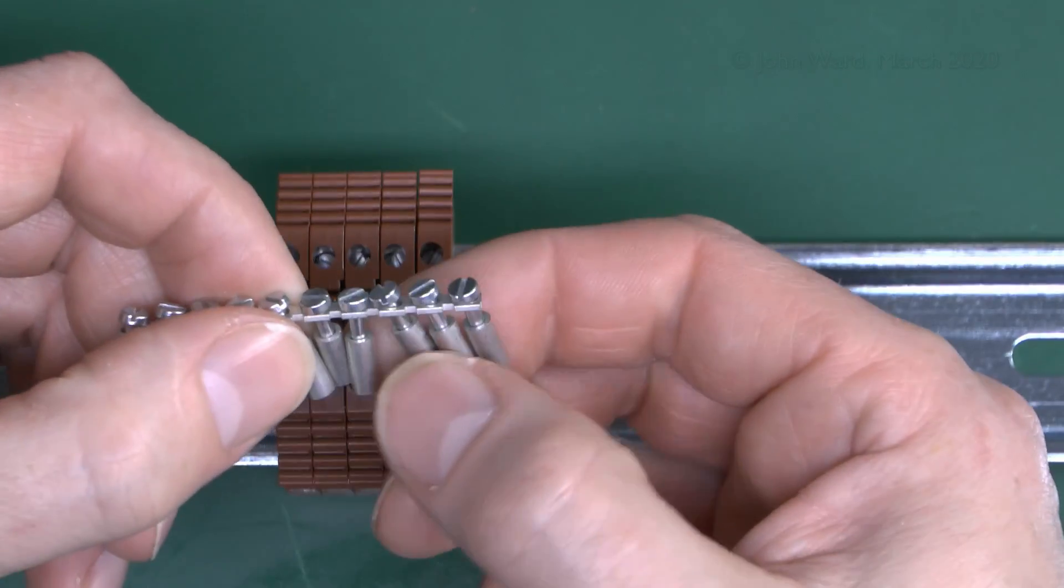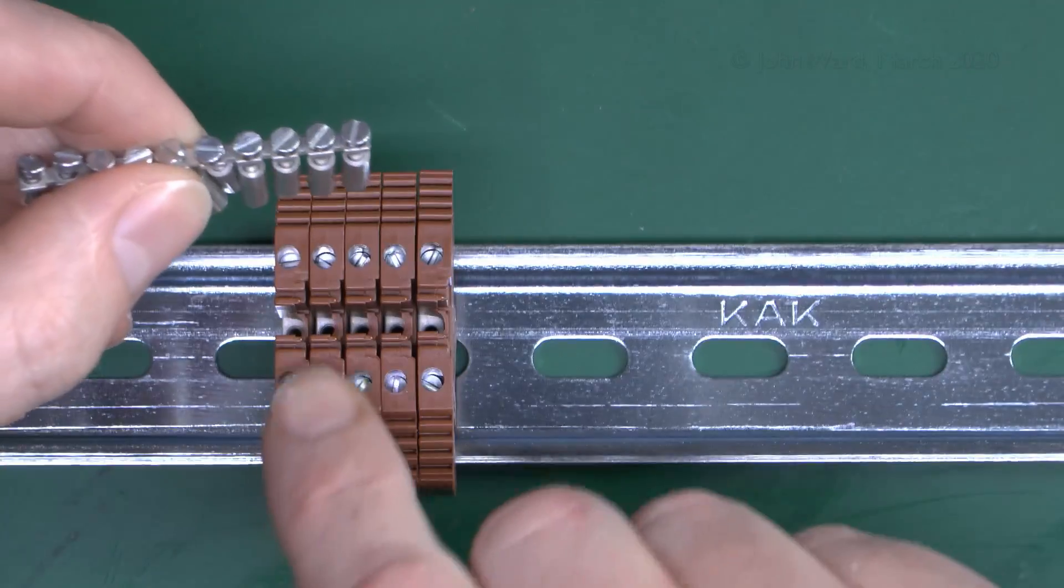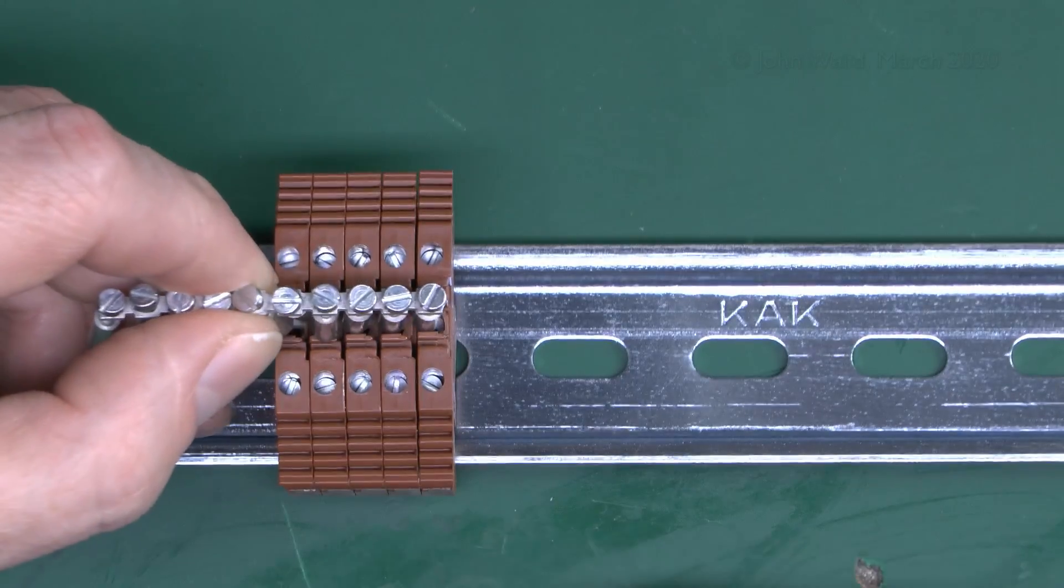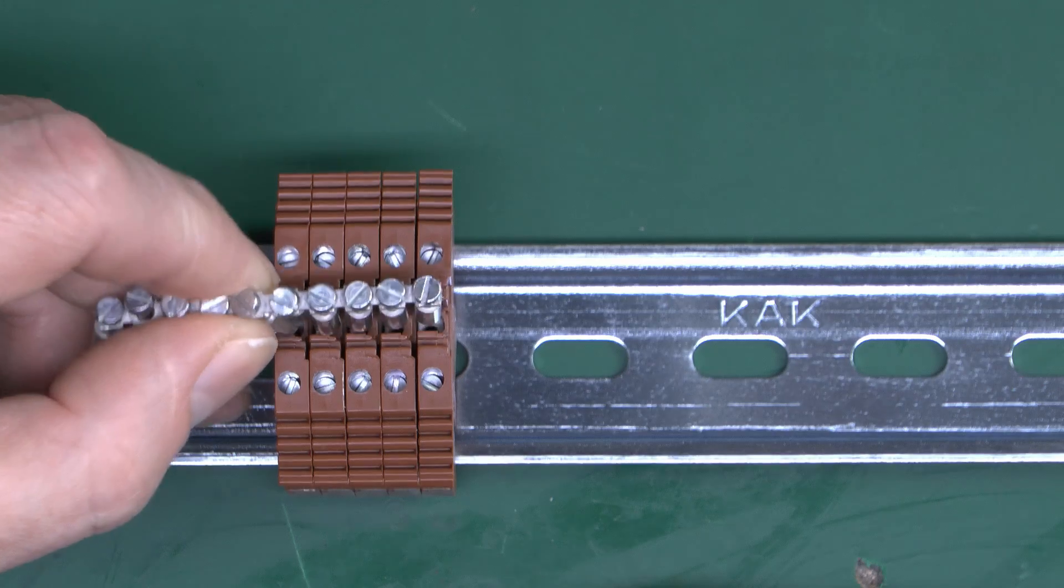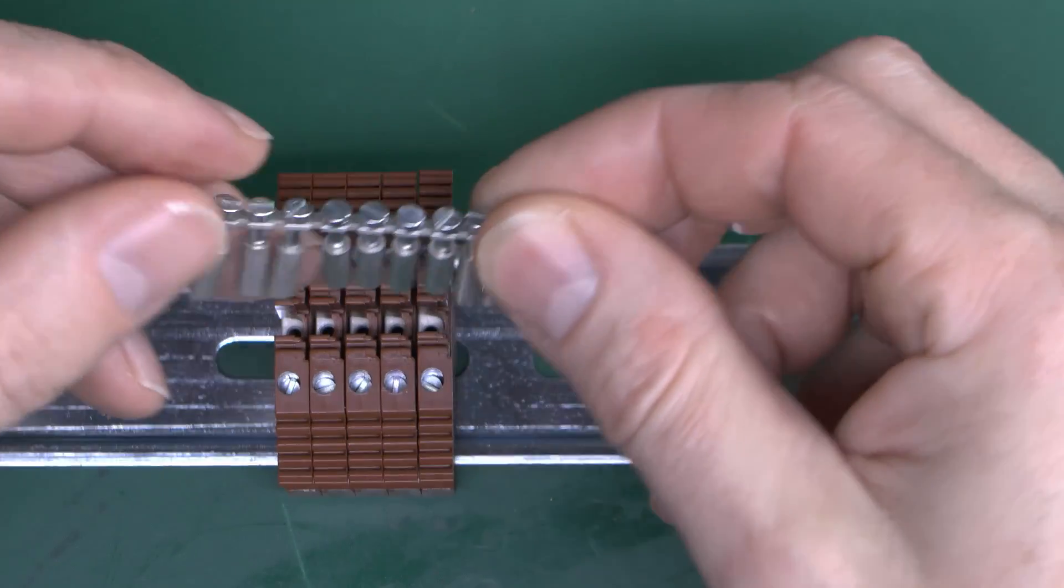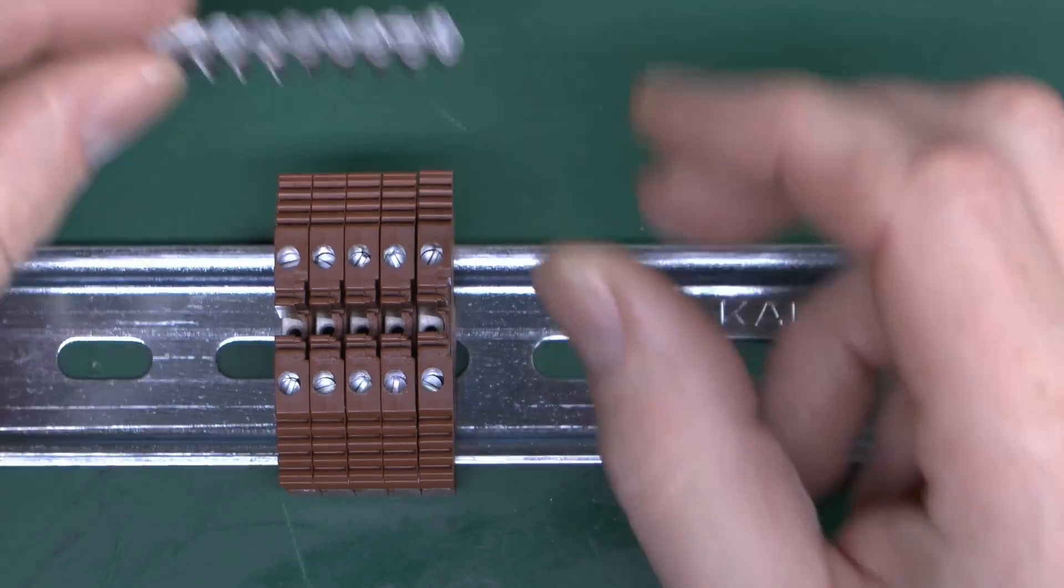It's also possible with these to take one out from the middle completely and have it bridge over. So you could have those two connected with these two and the middle one completely separate, although that'd be a fairly odd arrangement. But nevertheless, you can actually gang these up into blocks of as many as you would like, and fix those all together.